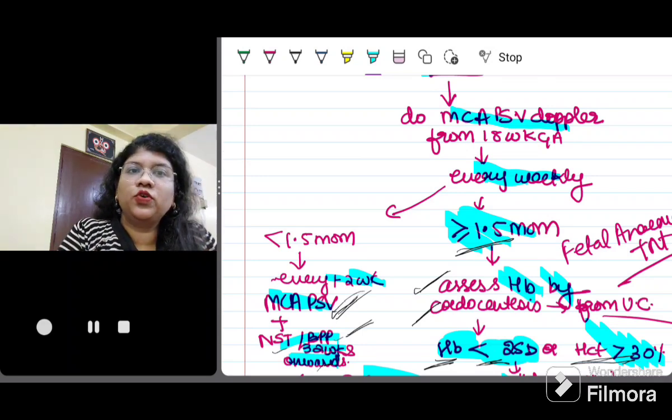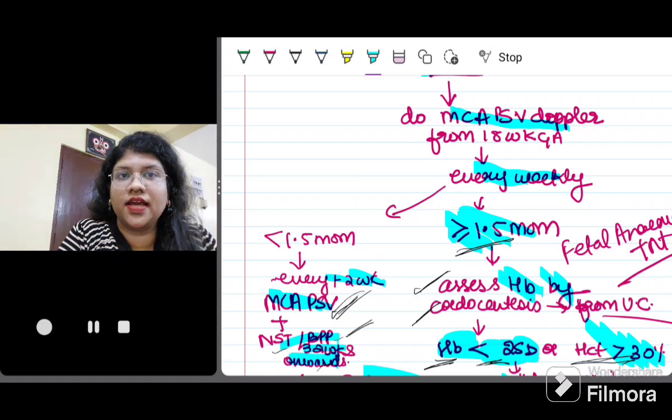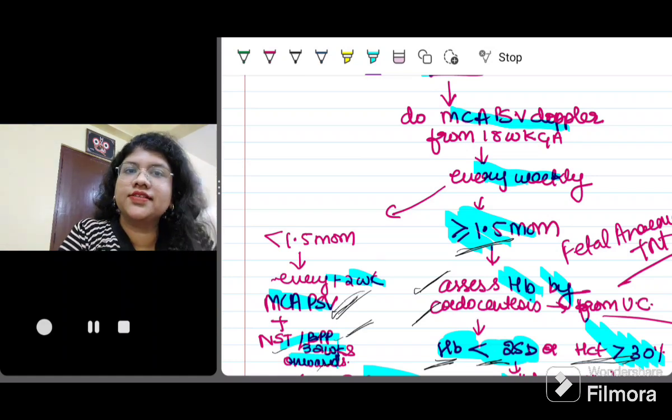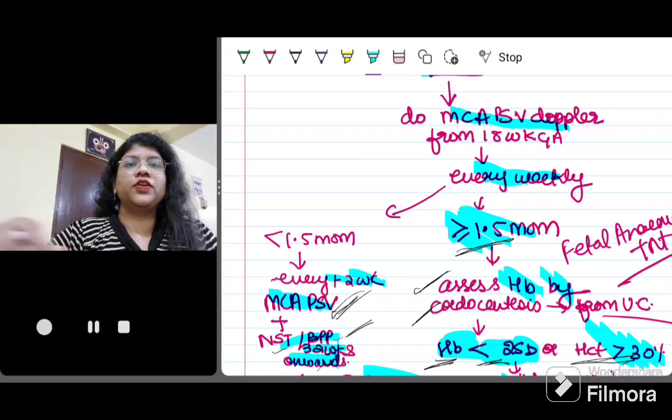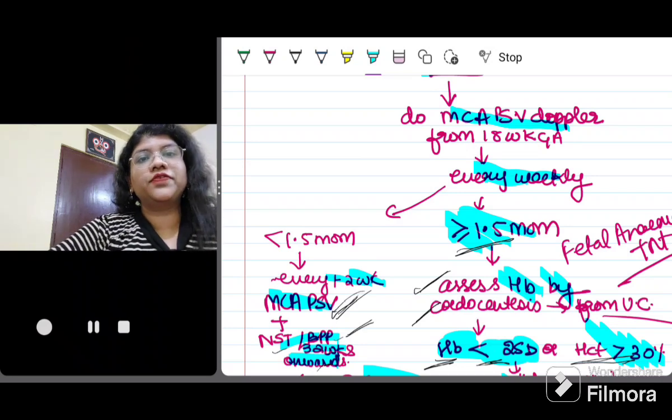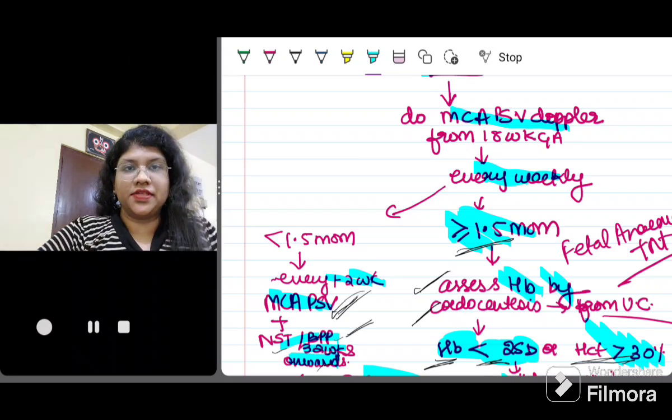So again some few take home points that you have to remember is that early cord clamping is beneficial if the female is not sensitized, whereas if she is already sensitized then there is no point in doing early cord clamping. The normal delayed cord clamping can be done. Also it is said that when we are giving 300 micrograms of anti-D, it prevents 30 ml of fetomaternal hemorrhage and 15 ml of fetal RBCs.